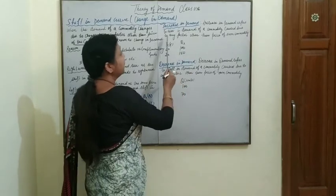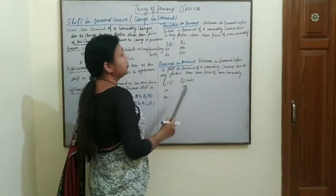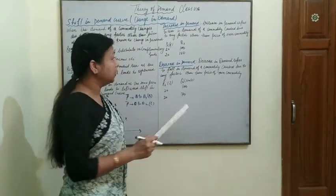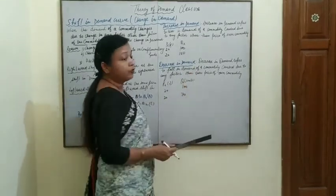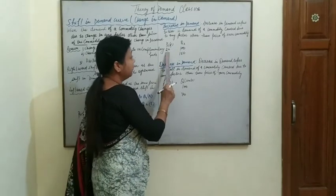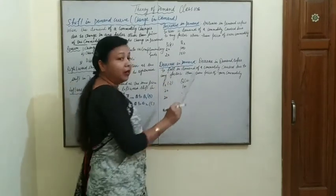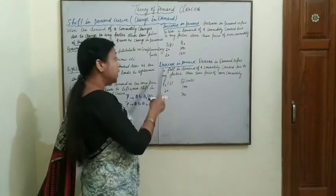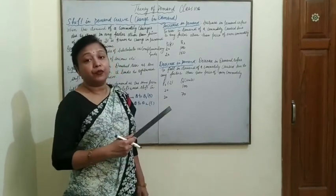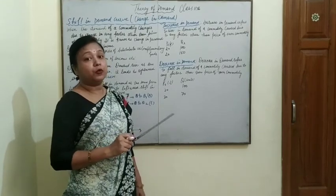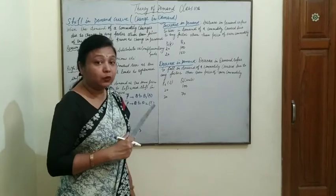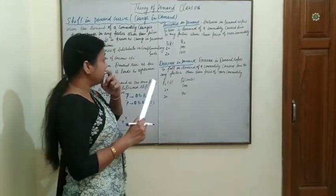Increase in demand refers to a rise in demand of a commodity due to change in other factors other than the price of the own commodity. Here price is constant. When the price is 20 rupees, we are demanding 100 units. Again, price is 20 rupees but now we are demanding 150 units. This can happen because our income has increased.